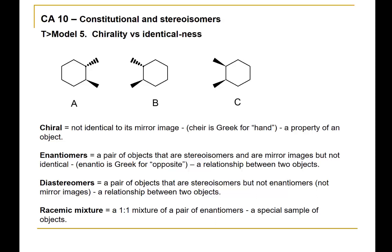They seem almost identical, but one thing you can notice in how they're drawn is that they are indeed mirror images. If you take molecule B and flip it over 180 degrees and try to superpose it on molecule A, you would see that it wouldn't superpose — because the methyl group going away from us would be coming out, and the methyl group coming out would be going back. So these structures are not superposable, and therefore the relationship is that these are enantiomers.